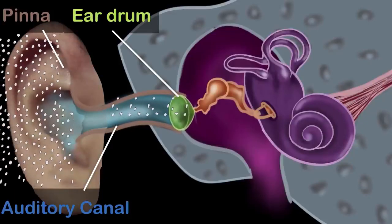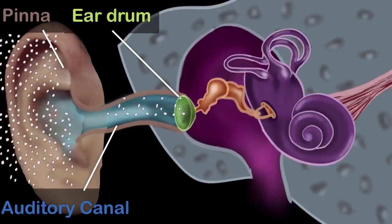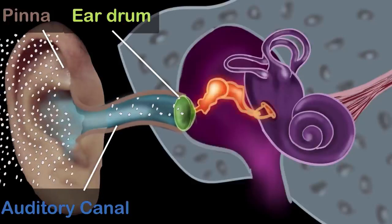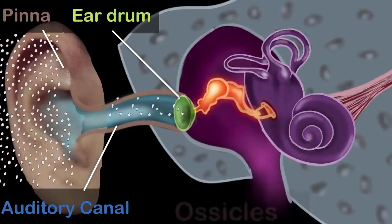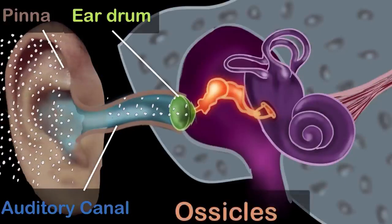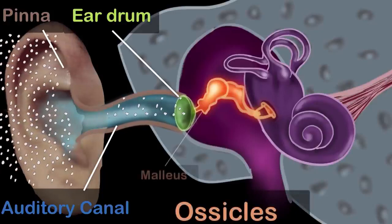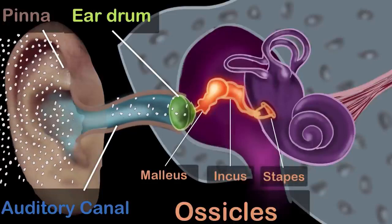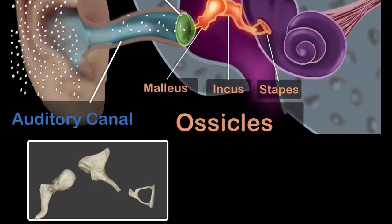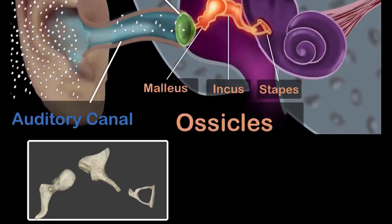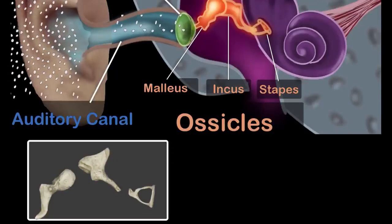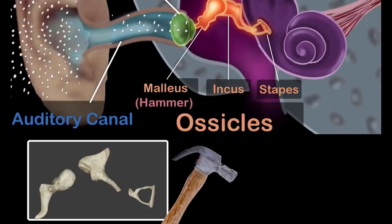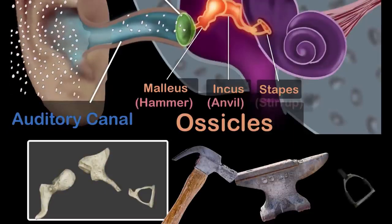This brings us to the middle ear. The middle ear consists of the three tiniest bones of the human body, and they are together called the ossicles. They have pretty cool names: they are called the malleus, the incus, and stapes. Here is the actual picture of these three bones, and because of their shapes they are also commonly called the hammer, the anvil, and the stirrup.